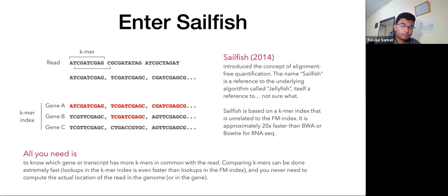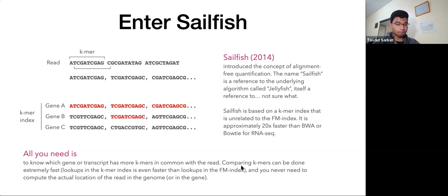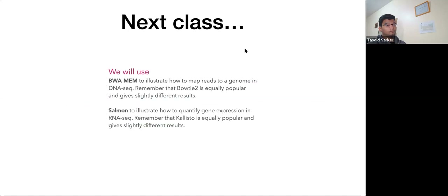All you need is to know which gene or transcript has more k-mers in common with the read. Comparing k-mers can be done extremely fast — lookups in the k-mer index are even faster than lookups in the FM index. You never need to compute the actual location of the read in the genome or the gene. All you do is count the k-mers that are the same. If you have a lot, you say this read is from that gene; otherwise it's not.